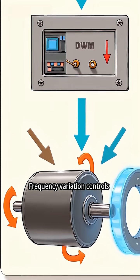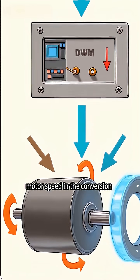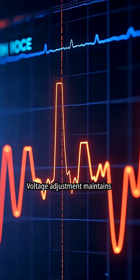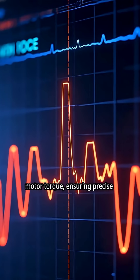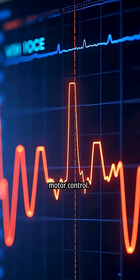Frequency variation controls motor speed in the conversion process. Voltage adjustment maintains motor torque, ensuring precise motor control.